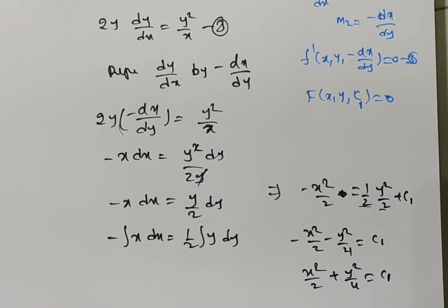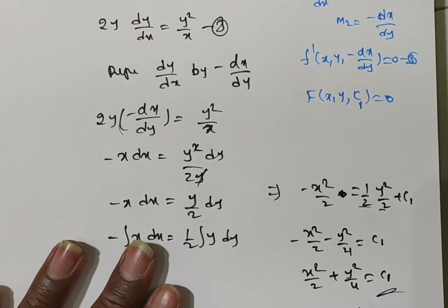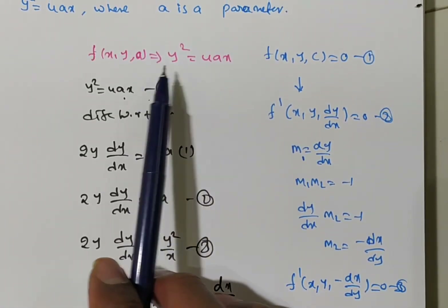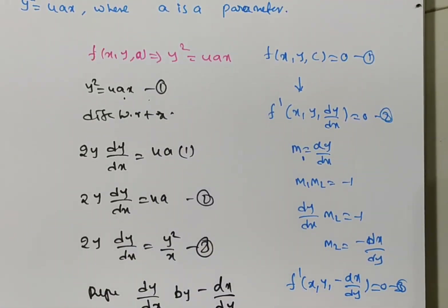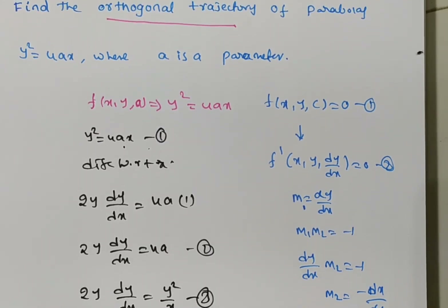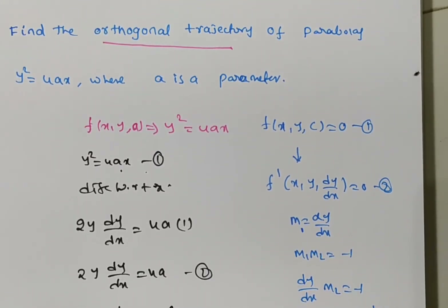This is the family of curves which is the orthogonal trajectory of the given family of parabolas y² = 4ax. Thank you for watching this video.